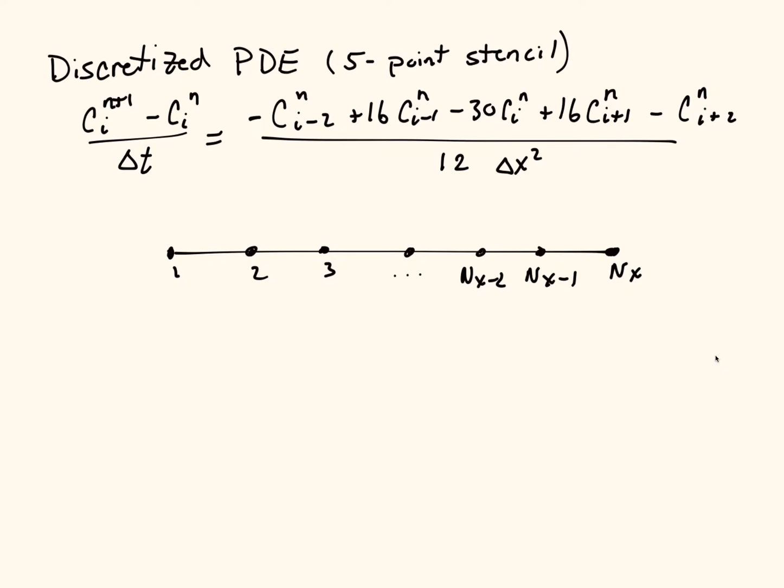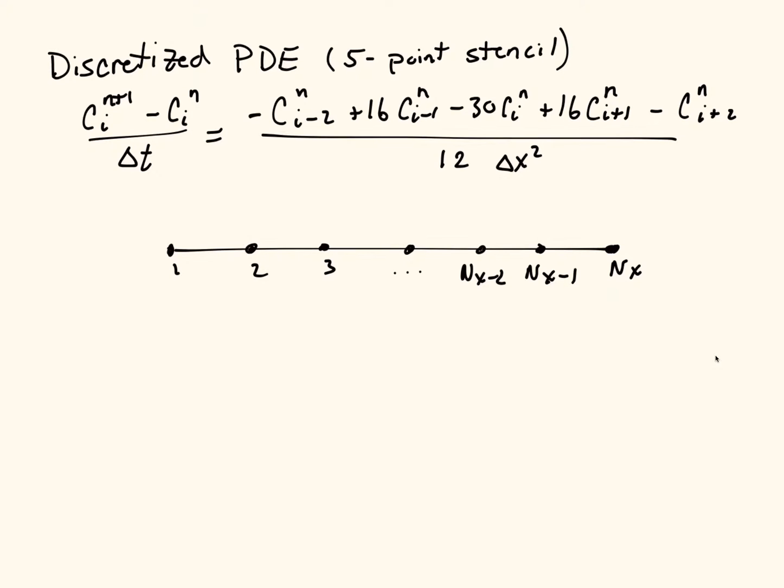If you're at any of the interior points you can just use your standard discretization. If you're at a boundary you need to use a periodic boundary condition. The key of the periodic boundary condition is that the first point is the same as the last point. So if I'm at i=1 or i=nx it doesn't matter, I should have the same value.